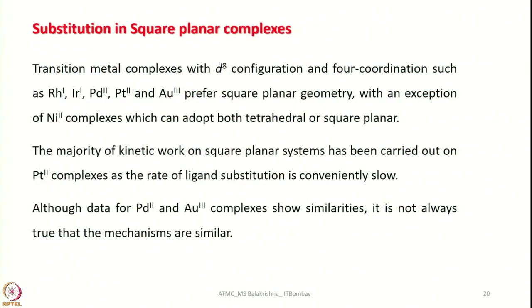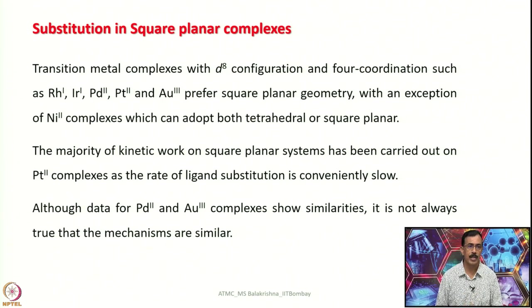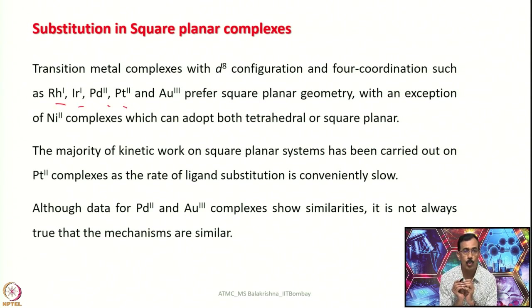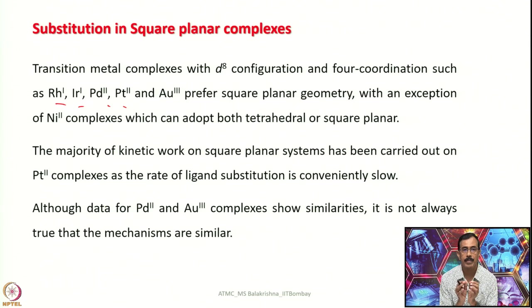Transmetallic complexes having D8 electronic configuration include rhodium, iridium, palladium, and platinum in the +2 state; rhodium and iridium in the +1 state; and gold in the +3 state. They all prefer square planar geometry, with an exception of nickel(II) complexes, which have a tendency to adopt both tetrahedral and square planar geometries even sometimes with strong field ligands.